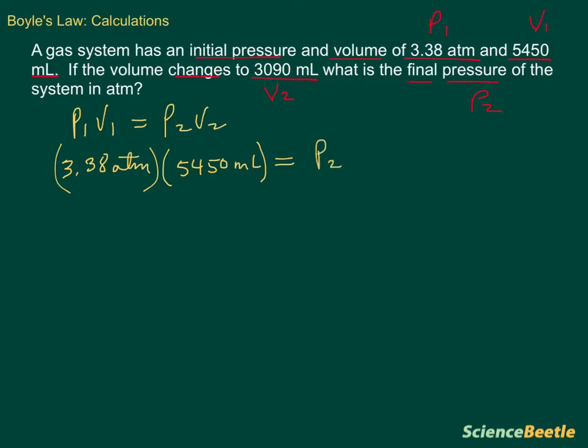but in this case we're looking for P2. And we're going to multiply this by our V2, which is 3090 milliliters.